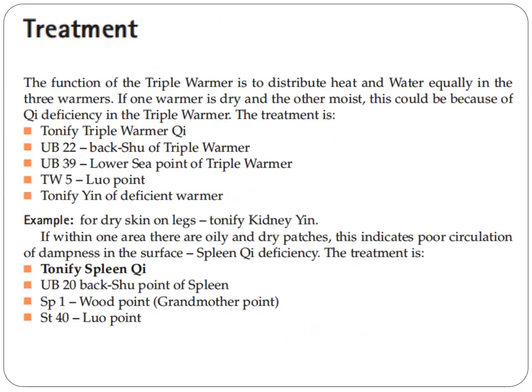Treatment. The function of the triple warmer is to distribute heat and water equally in the three warmers. If one warmer is dry and the other is moist, this could be because of qi deficiency in the triple warmer. The treatment is to tonify triple warmer qi by using UB-22, the back-shu point of the triple warmer; UB-39, the lower sea point of the triple warmer; and triple warmer 5, the luo-connecting point. Then tonify yin of the deficient warmer.